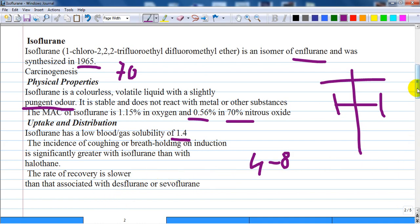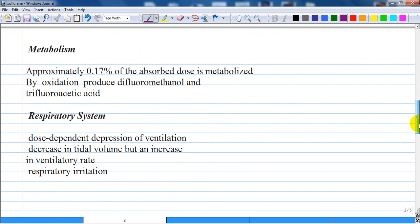Let's move on to the next slide. We will talk about metabolism and try to explain every system's side effects. Approximately 0.17% of the absorbed dose is metabolized. Metabolism takes place predominantly in the form of oxidation to produce difluoromethanol and trifluoroacetic acid.